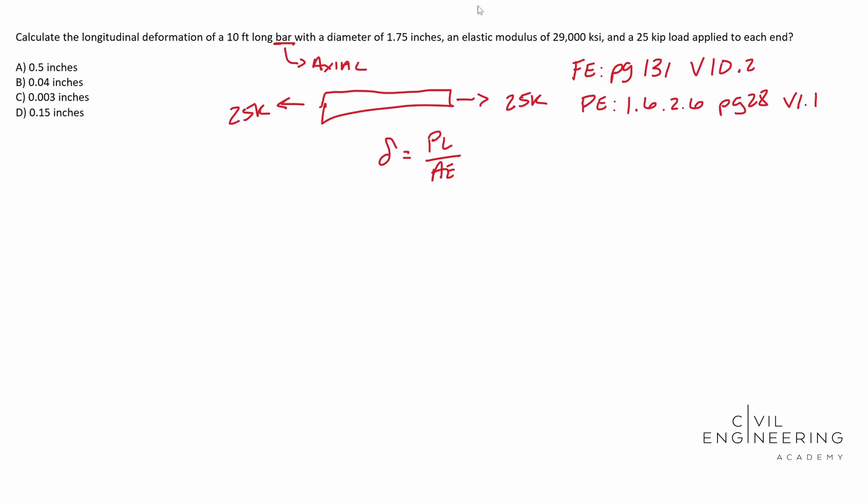For our P, we're going to plug in 25 kips. And notice, I mean, we got to have our units work out. P needs to be in kips in order for the elastic modulus to cancel out with the kips per square inch. We need to have our units work together for us right here. So 25,000 kips times L.